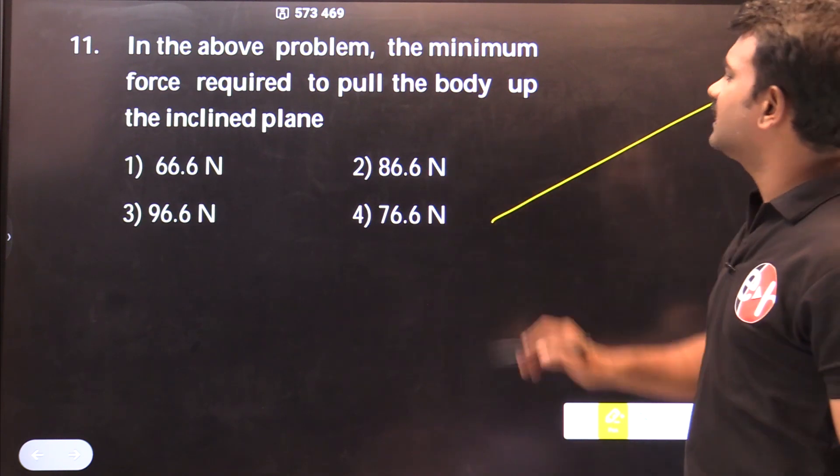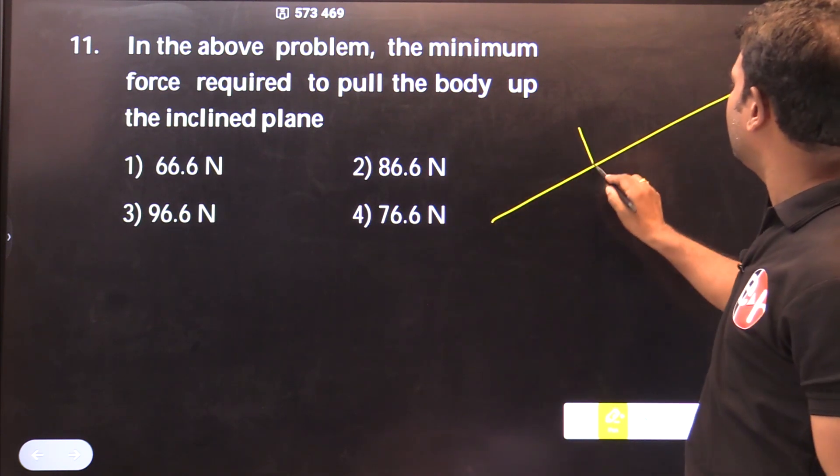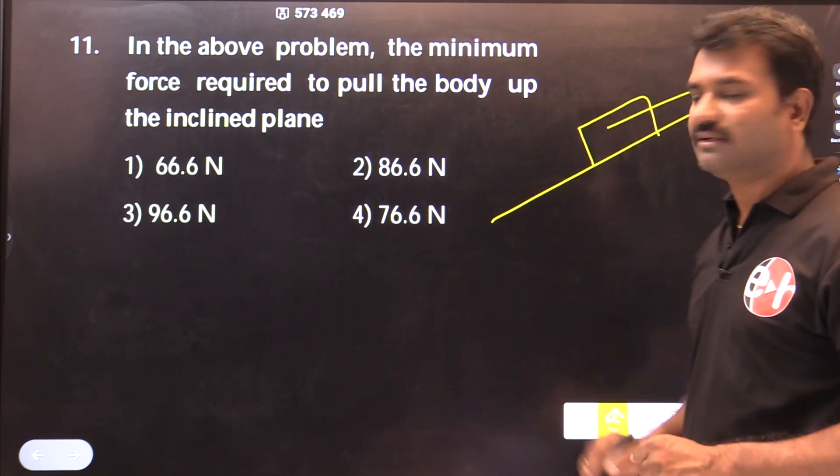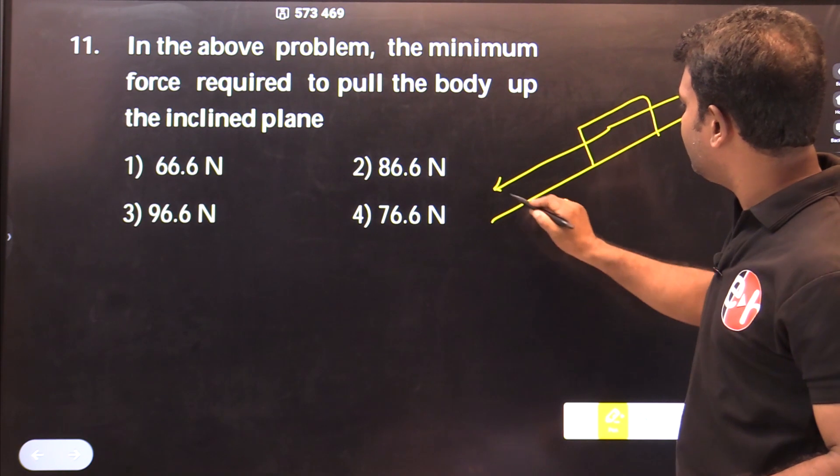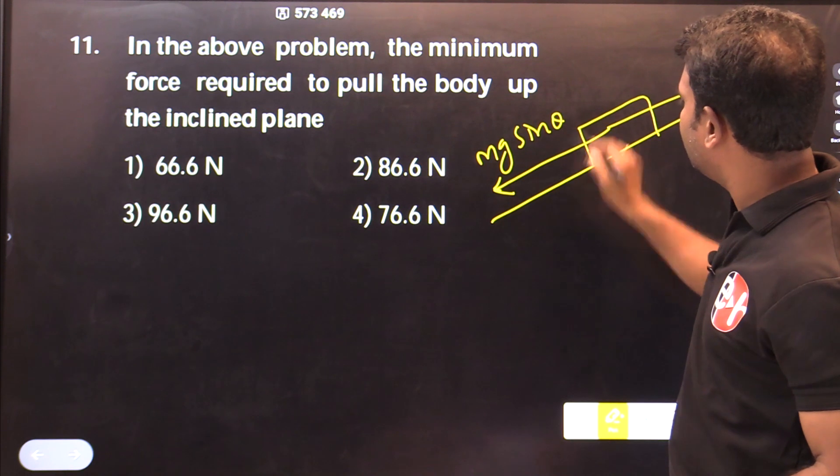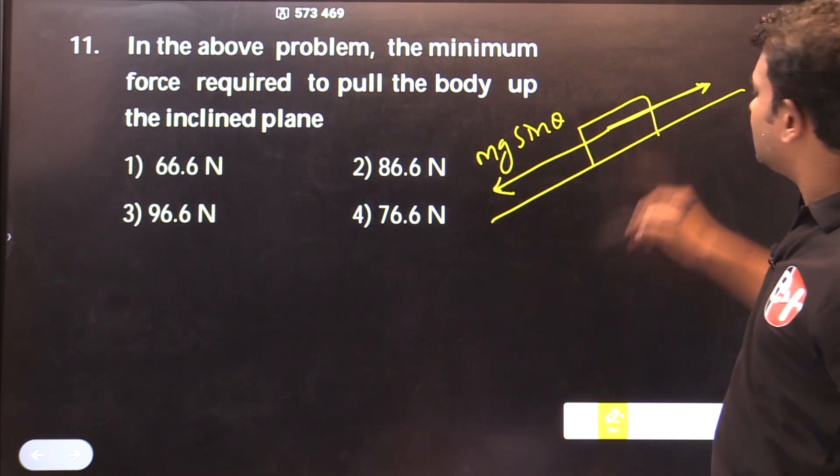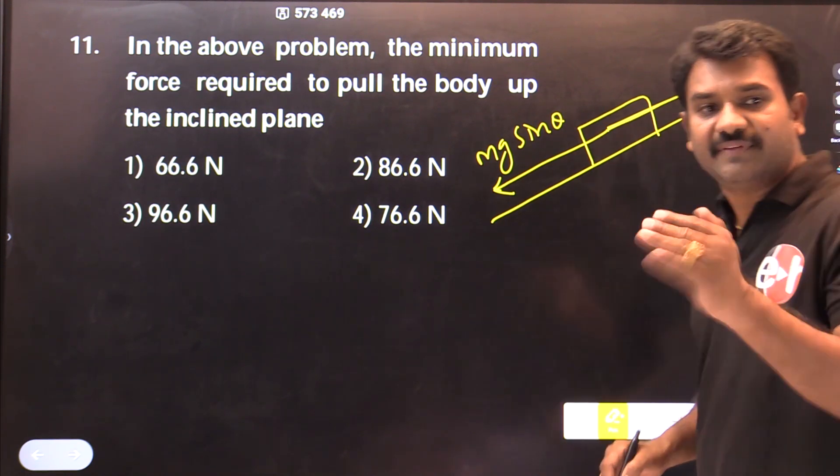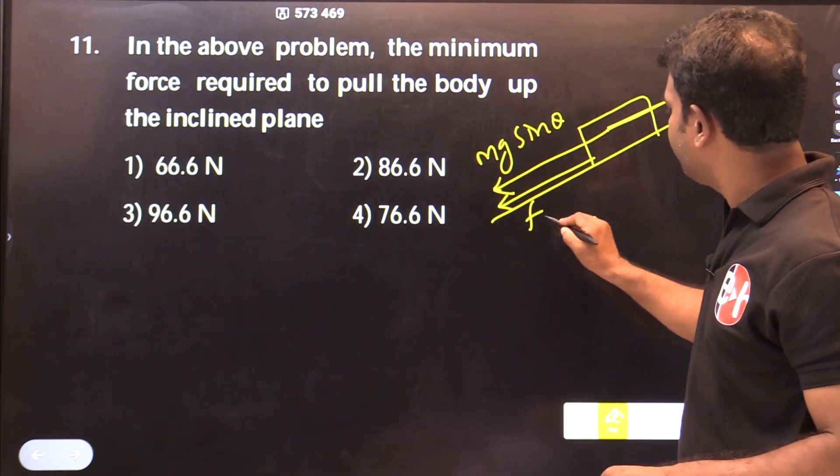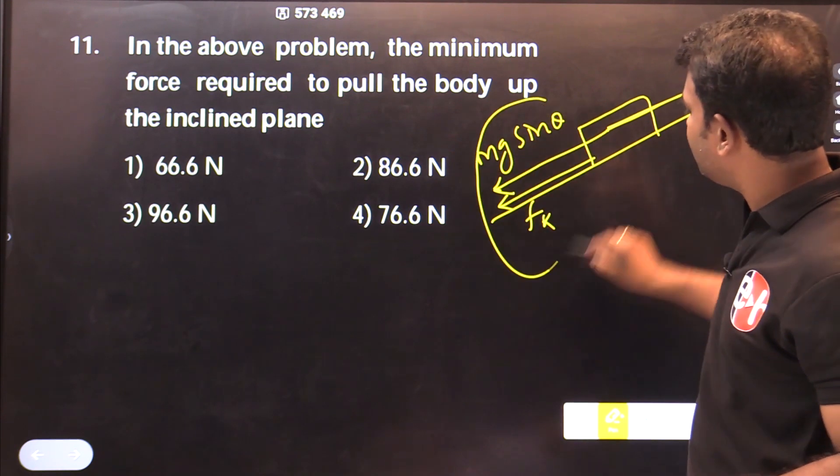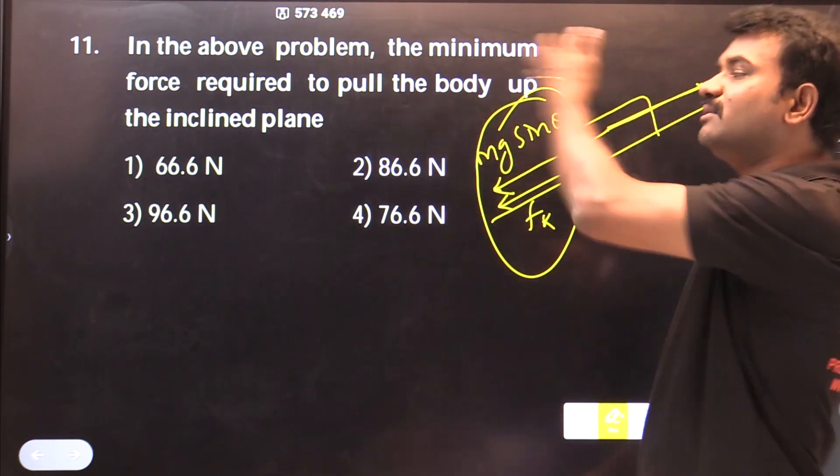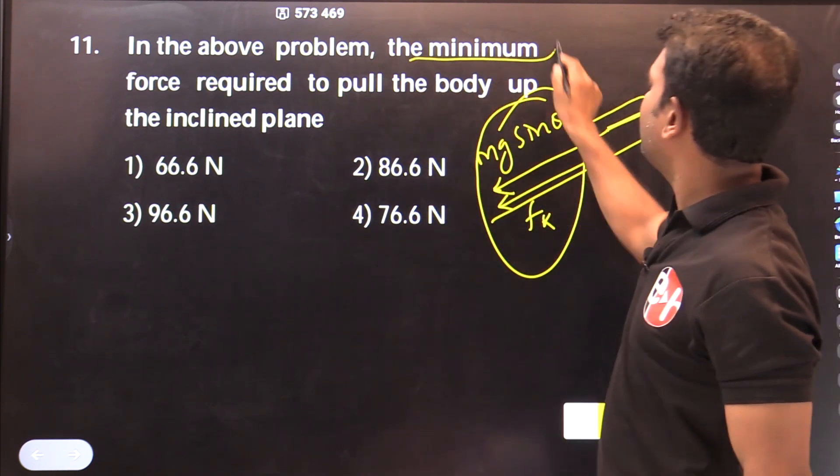In the above problem, the minimum force required to pull the body up the inclined plane. The force needed is mg sine theta, and to pull upwards the friction direction changes, so mg sine theta plus friction.